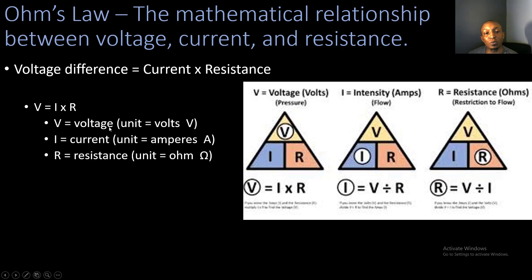In this formula, V equals voltage with the unit volts (V); I equals current with the unit amperes (A); and R equals resistance with the unit ohms, represented by the omega symbol.